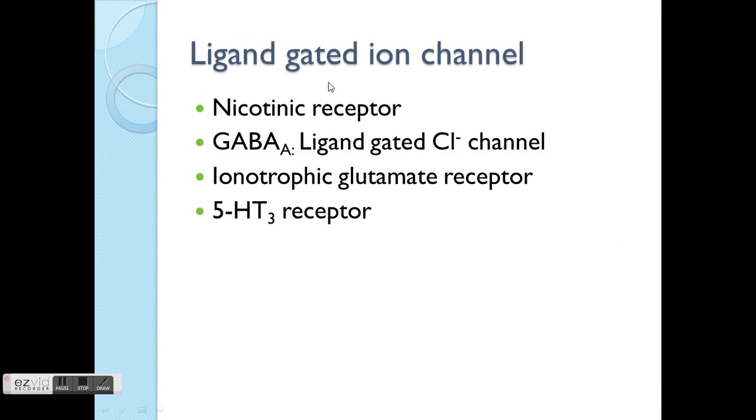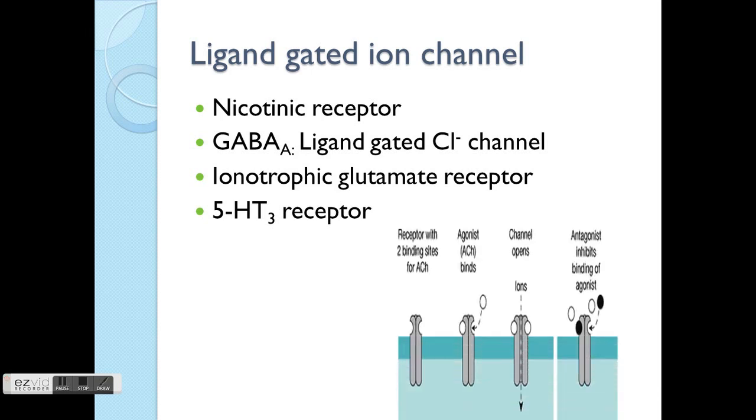There are some other examples for ligand gated ion channels. These include nicotinic receptors, GABA-A, ionotropic glutamate receptors, and 5-HT3 receptors. All these play an important role especially at the central nervous system. Basically what these are, are the signals which are going on in the brain. This requires the binding of ion channels.